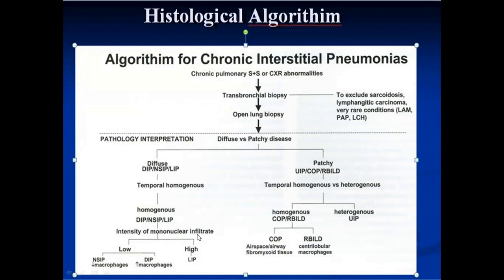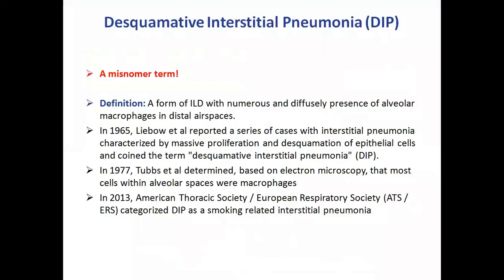Then it comes down to the intensity of mononuclear infiltrates. However, there are also other features which can distinguish one from another. If we have low mononuclear infiltrates and a high number of macrophages in the alveolar spaces, then our most likely diagnosis is DIP. But there are other features as well which can distinguish them from one another.